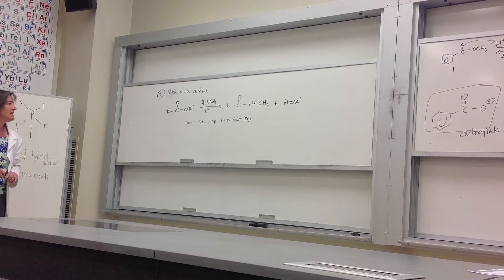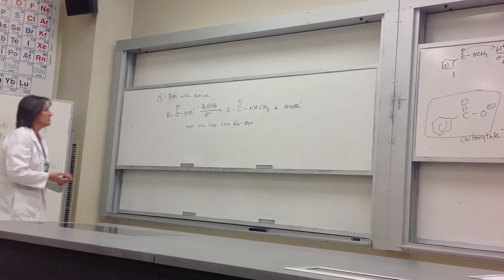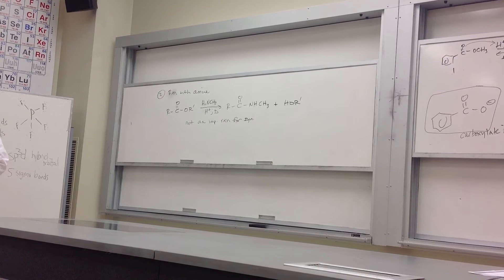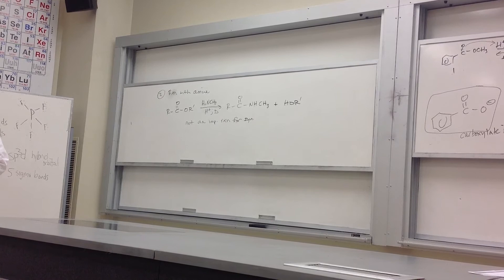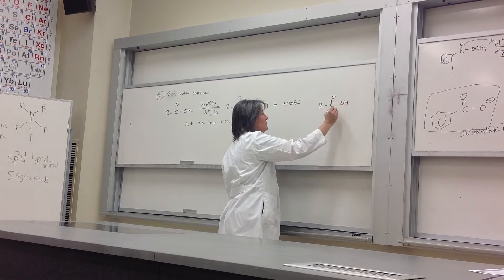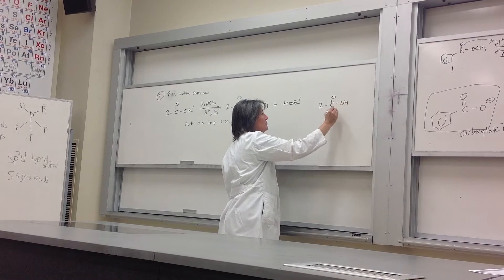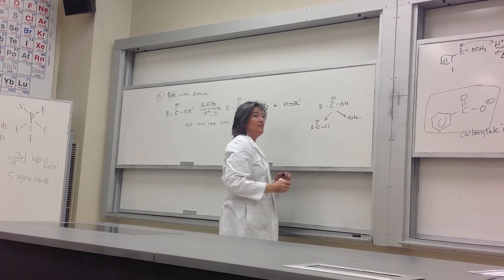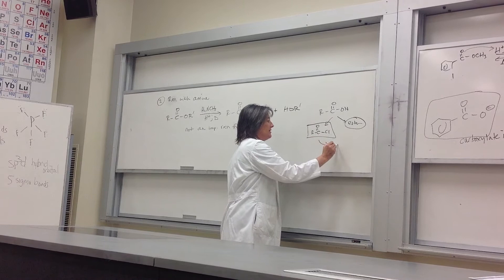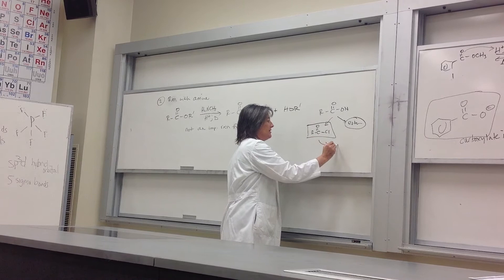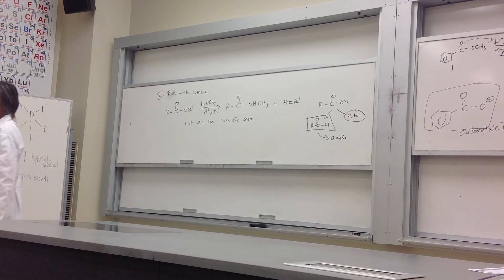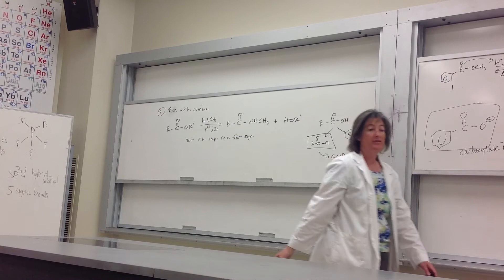Why would you not take an ester and convert it to an amide? Esters come from carboxylic acids, and with a carboxylic acid you could make an acid chloride directly and then react that with an amine to get the amide. Why make an ester just to then beat on it to get your amide? You'd make the acid chloride instead. So no one actually does this — it works on paper but it's not practical.